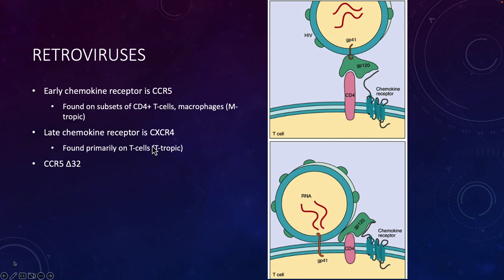In a later stage of infection, they could use a different receptor called CXCR4, but again, we're primarily talking about CCR5.